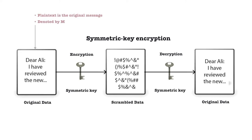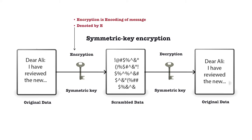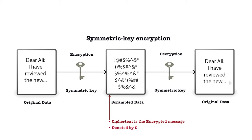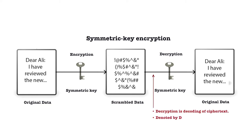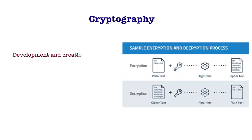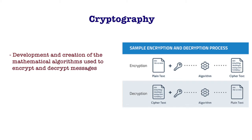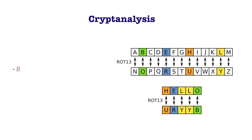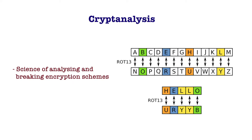Plain text or clear text is the message, denoted by M. Encryption is the process of encoding the message, denoted by E. Ciphertext is an encrypted message, denoted by C. Decryption is the process of decoding ciphertext, denoted by D. Cryptography is most closely associated with the development and creation of mathematical algorithms used to encrypt and decrypt messages; it is about secure communication in the presence of adversaries. Cryptanalysis is the science of analyzing and breaking encryption schemes. Cryptology is the combination of cryptography and cryptanalysis.